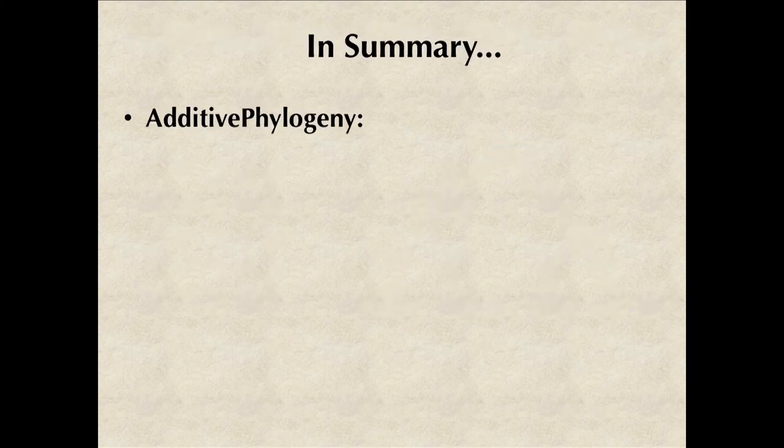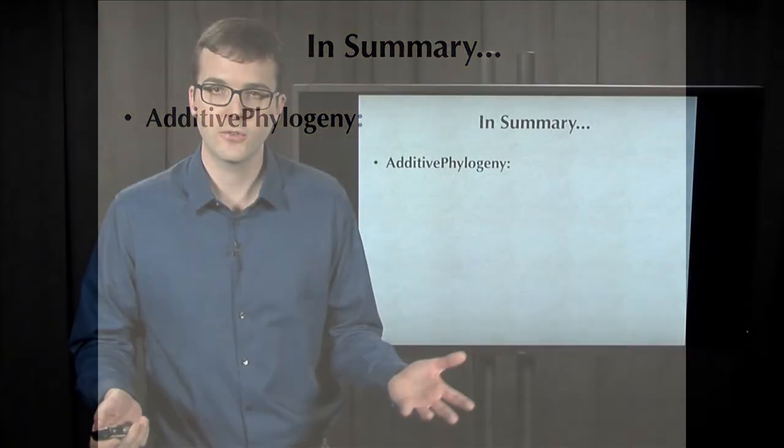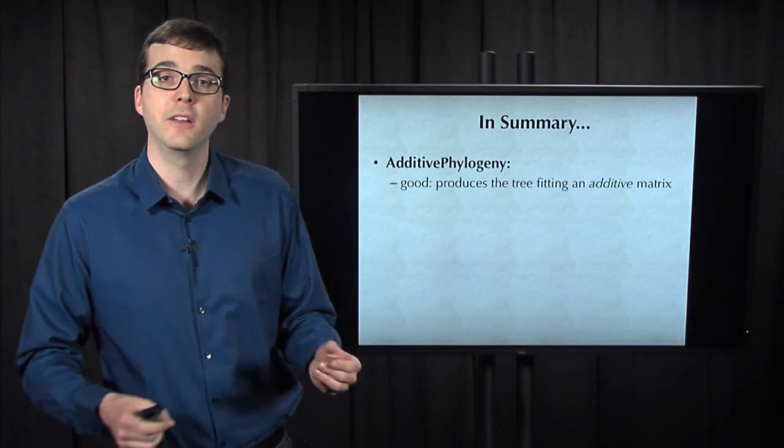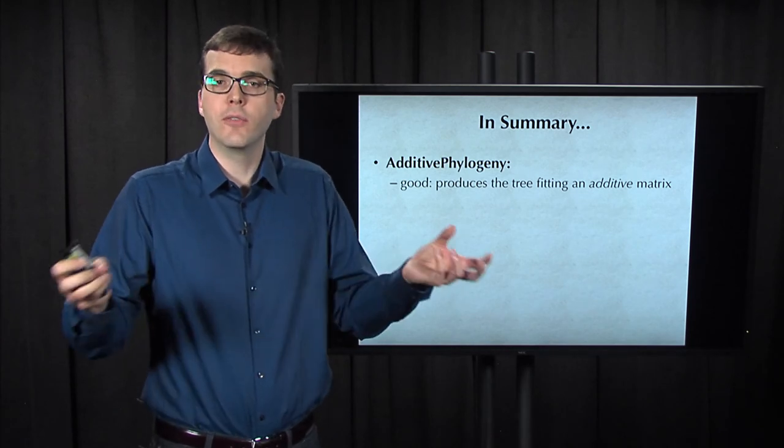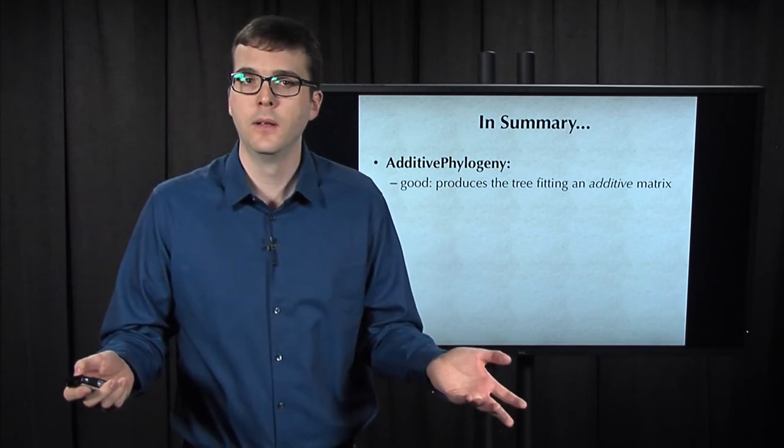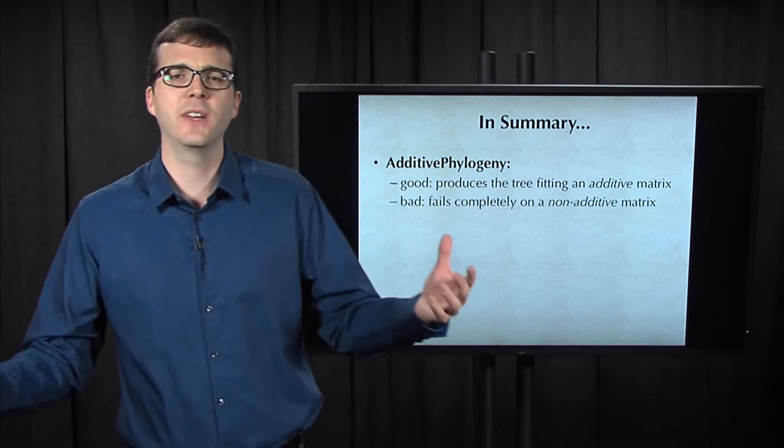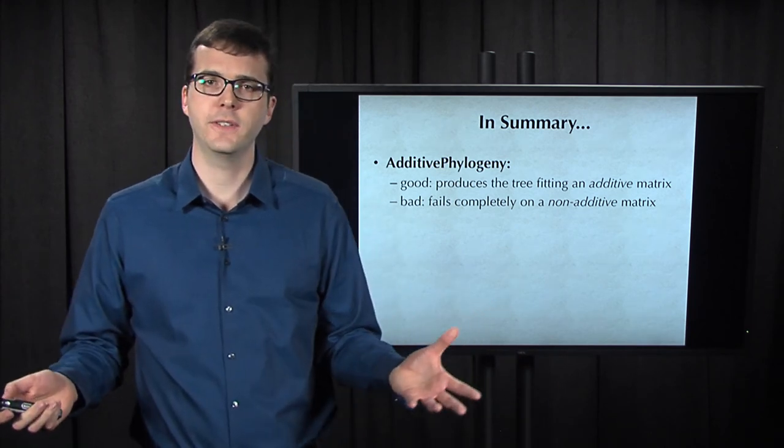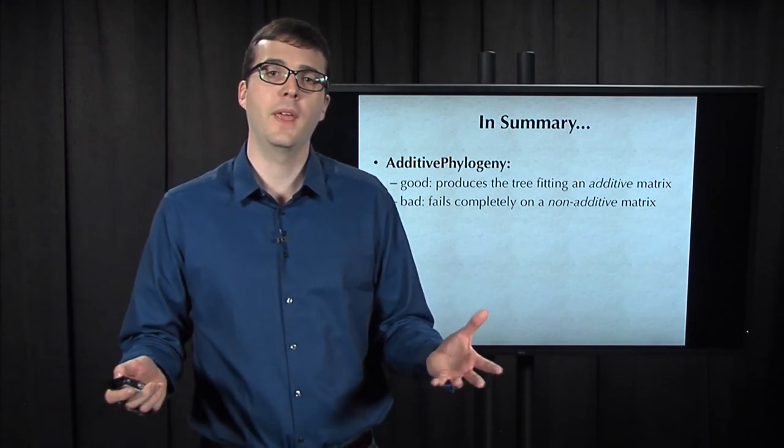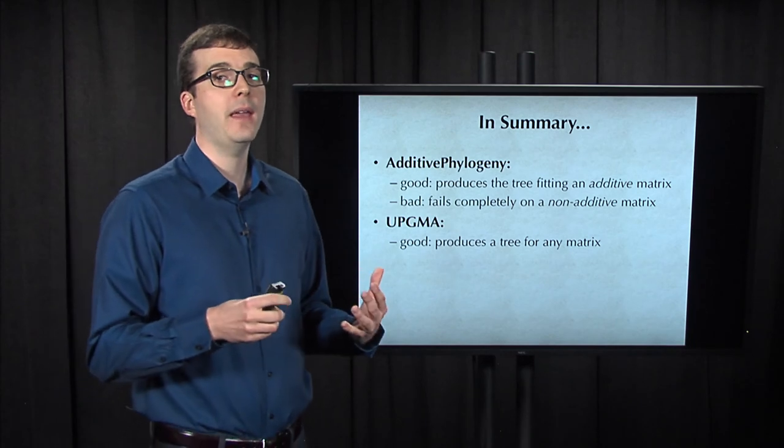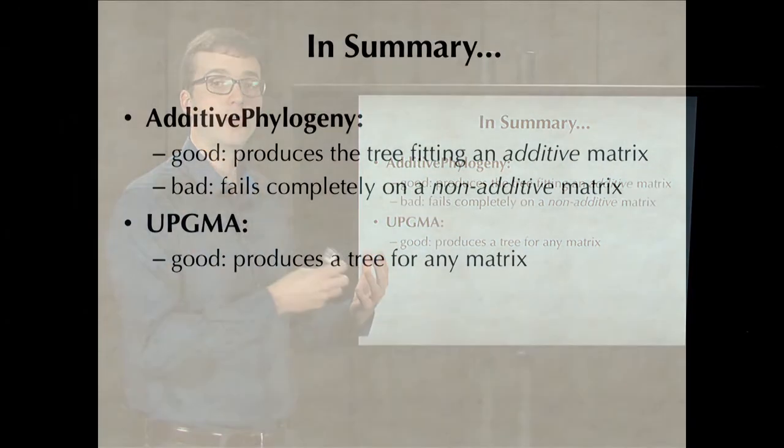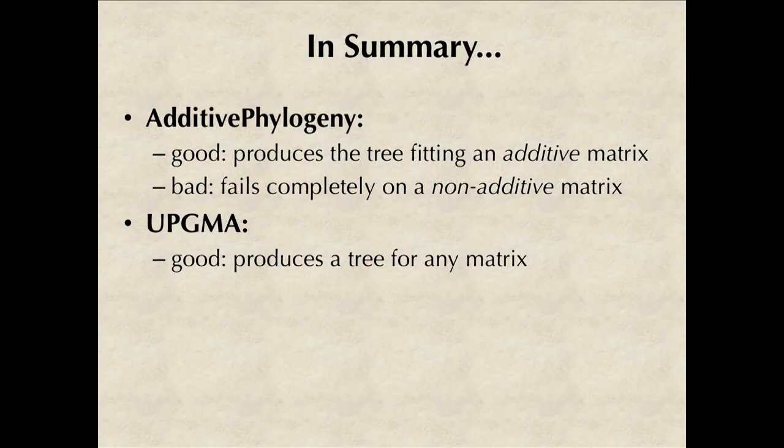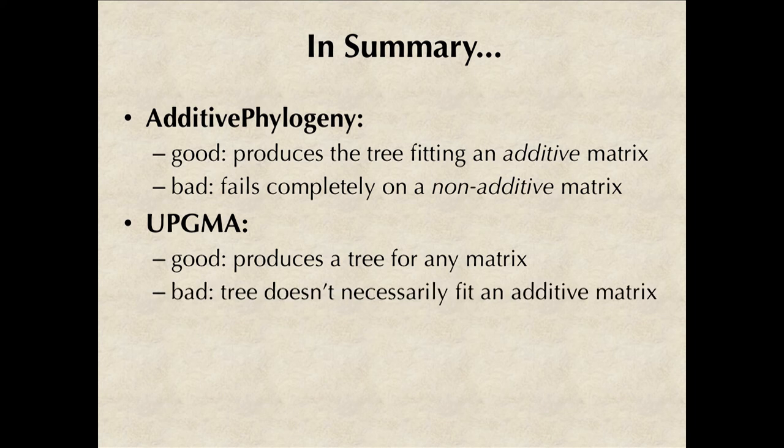So in summary, we've encountered two methods for constructing an evolutionary tree from a distance matrix. Additive phylogeny works if you give it an additive matrix as input, but then, on the other hand, it fails completely on non-additive matrices. Then, UPGMA, in contrast, will produce a tree for any input that you like, but the tree produced doesn't necessarily fit an additive matrix in a natural way.